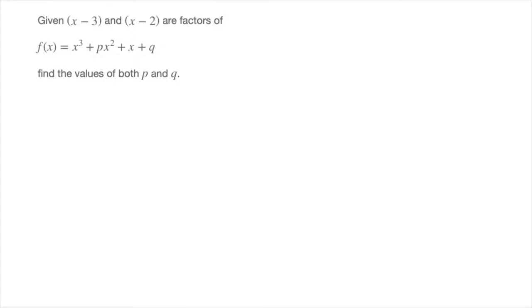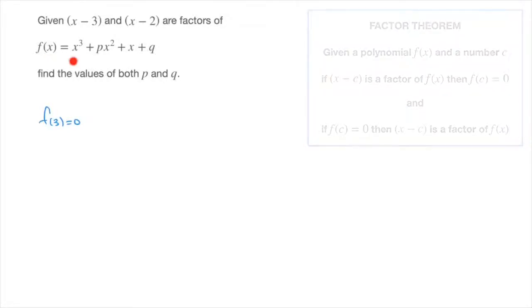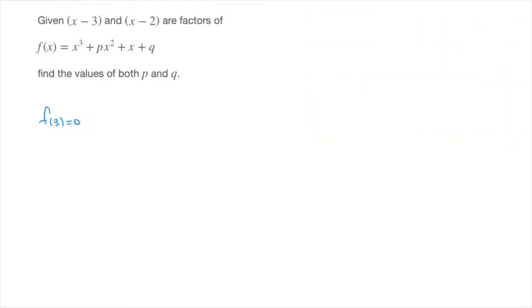So to begin with, let's focus on the factor x minus 3. The factor theorem allows us to state the following: if x minus 3 is a factor, then f of 3 must equal 0. Furthermore, if we replace x by 3 inside the expression for f of x, we obtain the following.